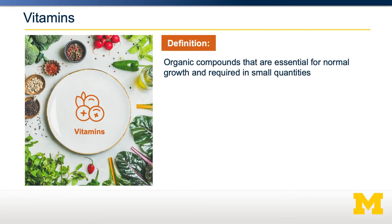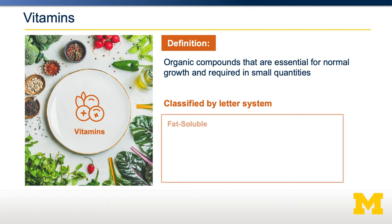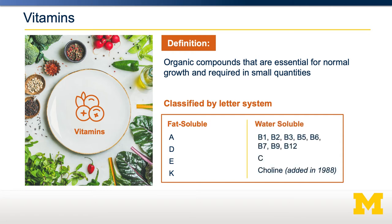Vitamins are defined as organic compounds that are essential for normal growth and required in very small quantities. This is distinct from macronutrients, which are generally required in larger quantities. Vitamins can be classified into two types: the fat-soluble vitamins — vitamin A, D, E, and K — and the water-soluble vitamins — the B vitamins, vitamin C, and choline.